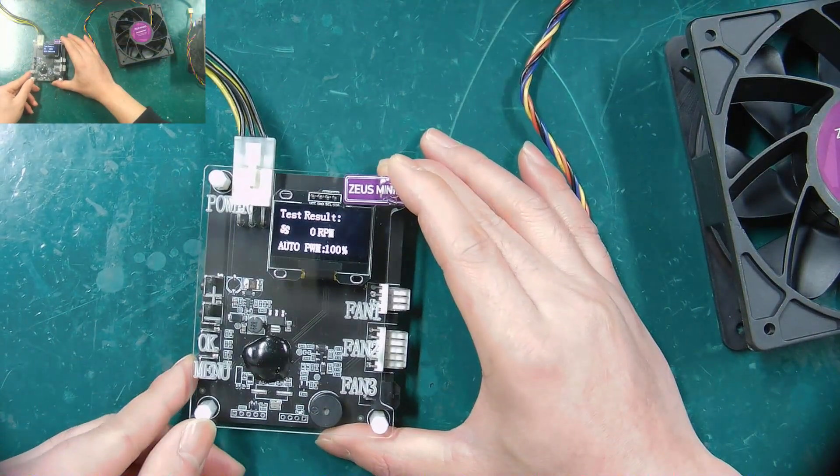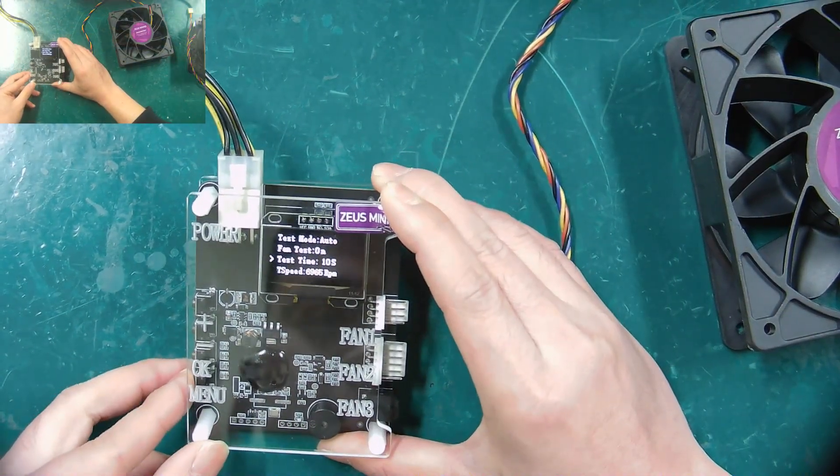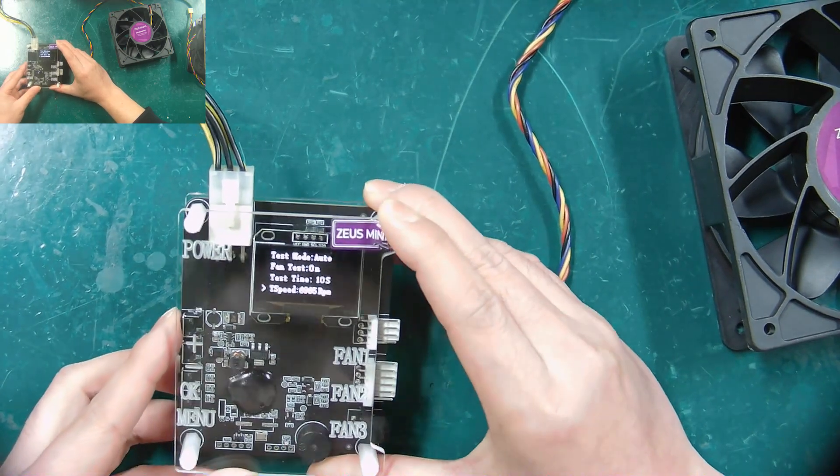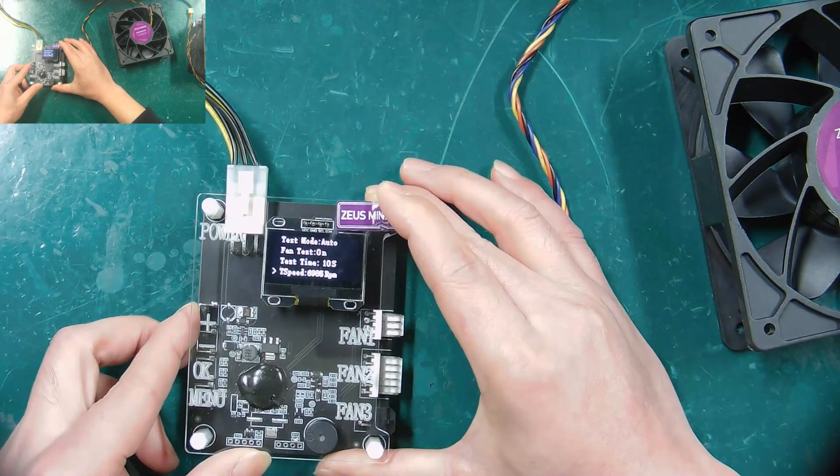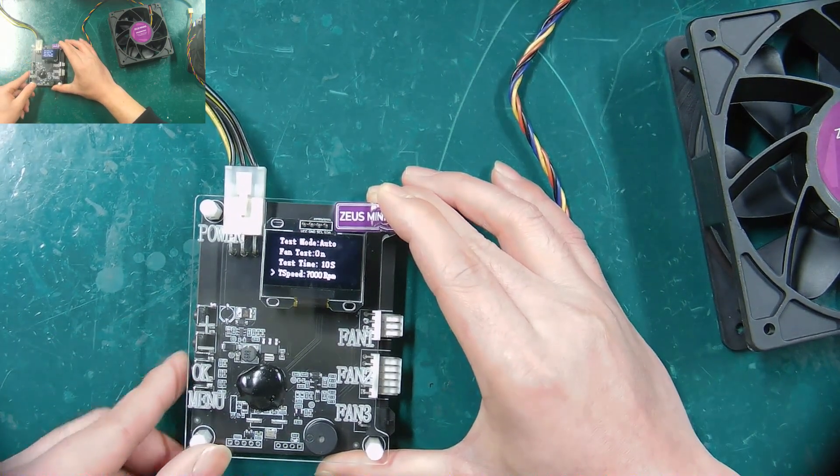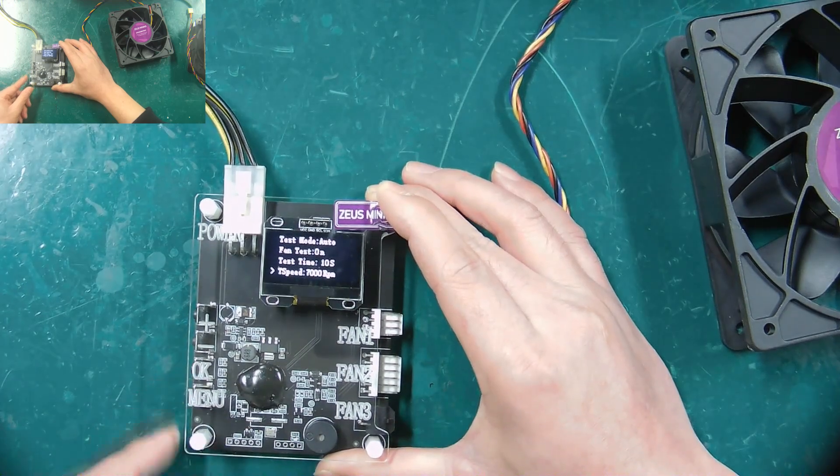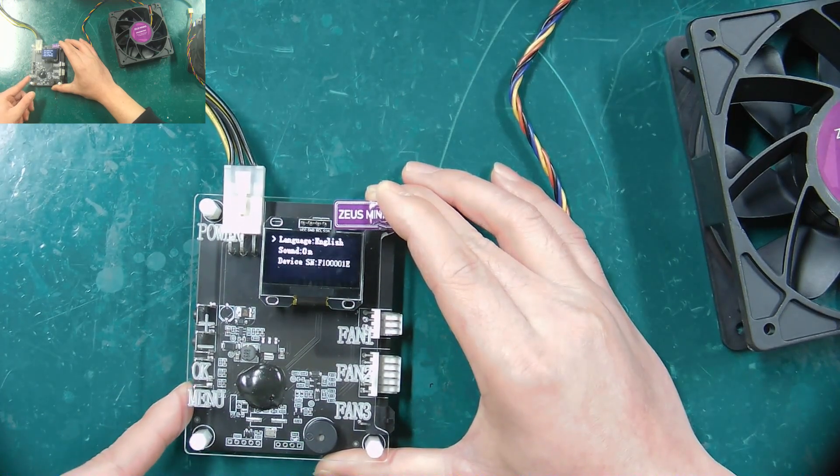First, we set the parameters of the tester according to the fan speed, 7,000 RPM. Press the OK button to save the setting, and then return to the test interface.